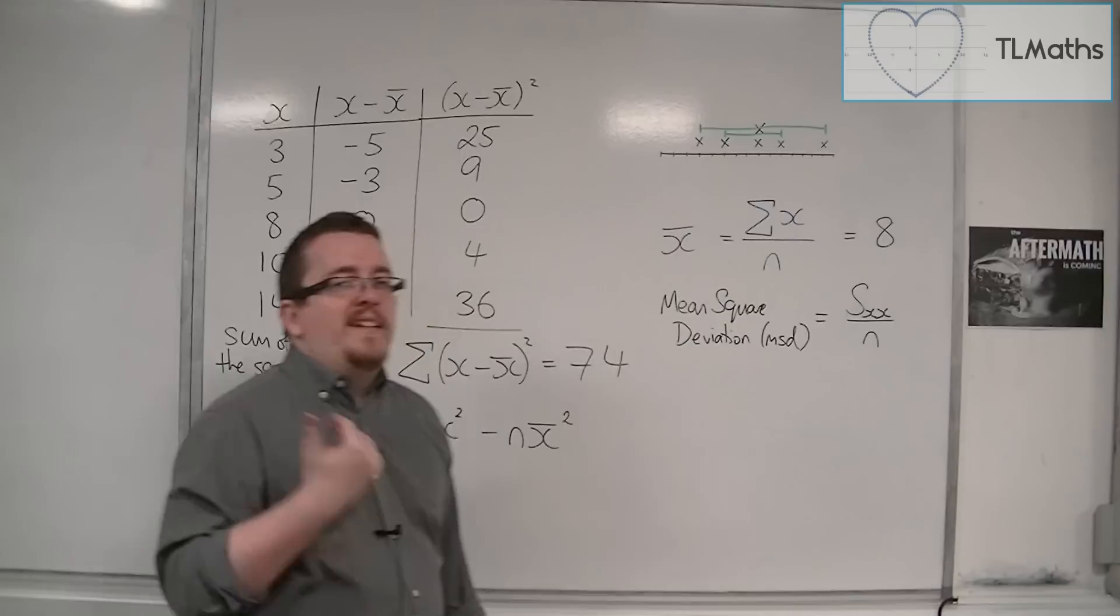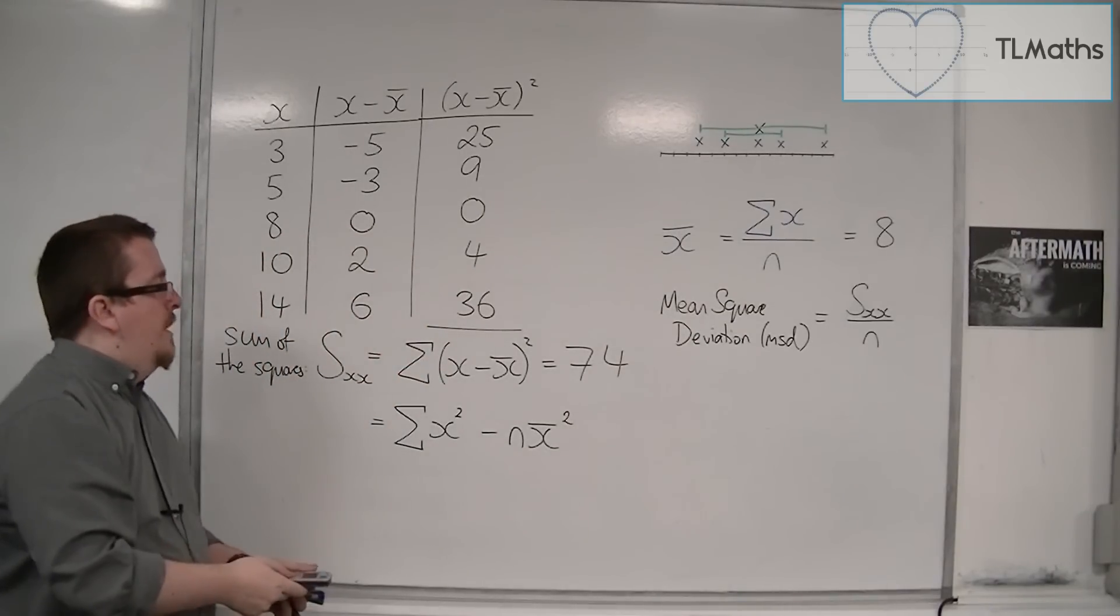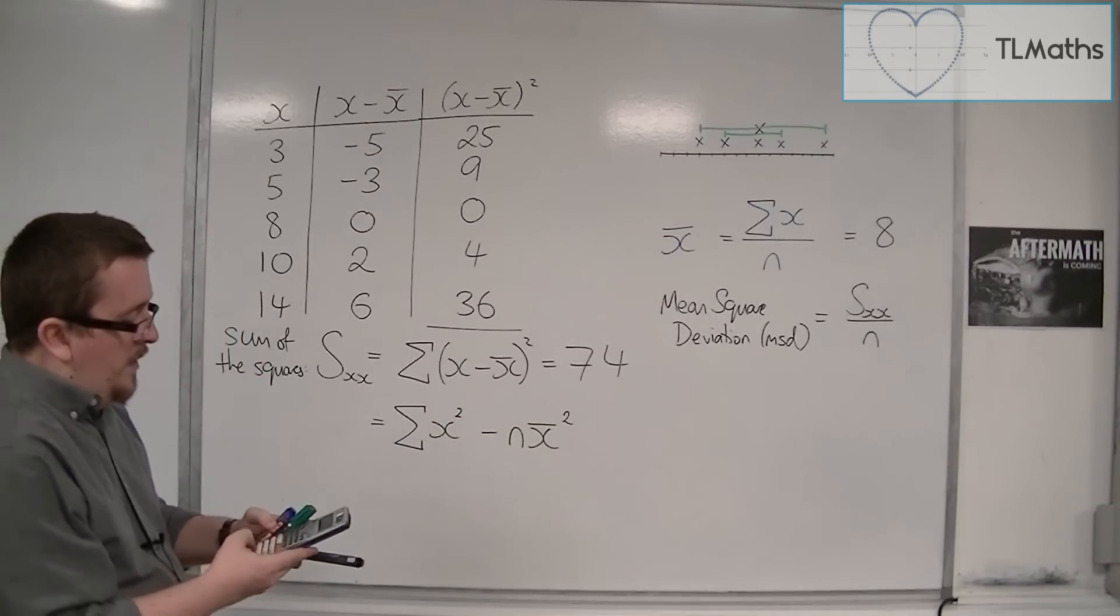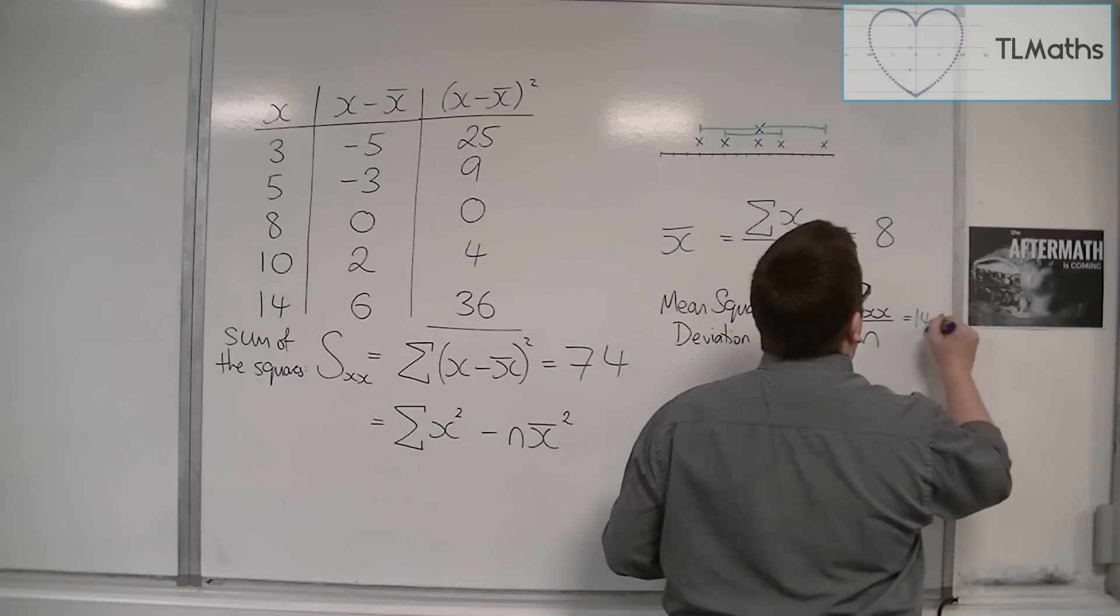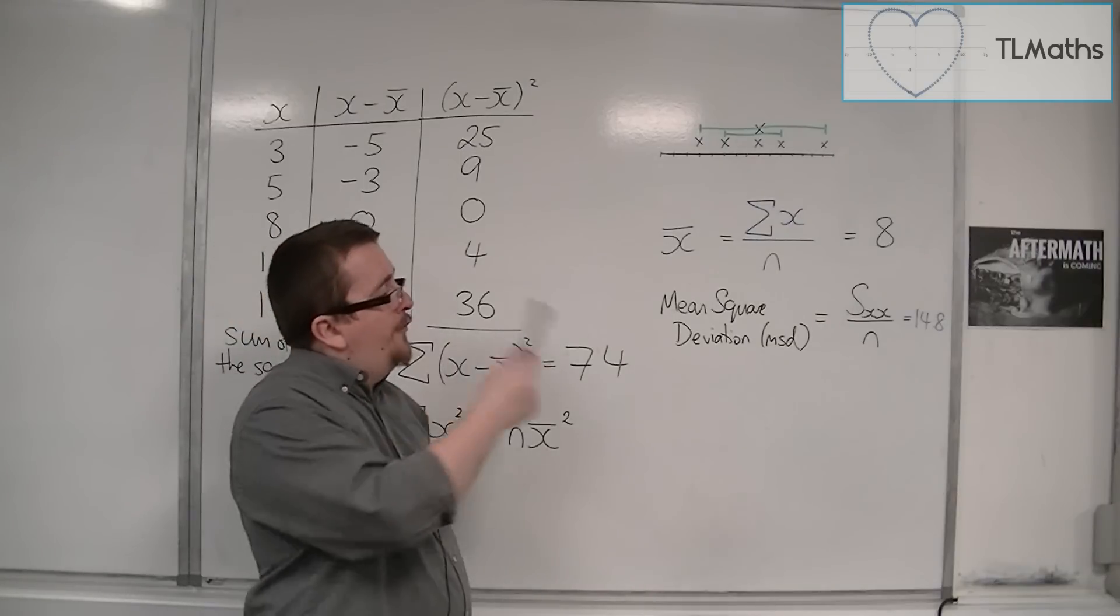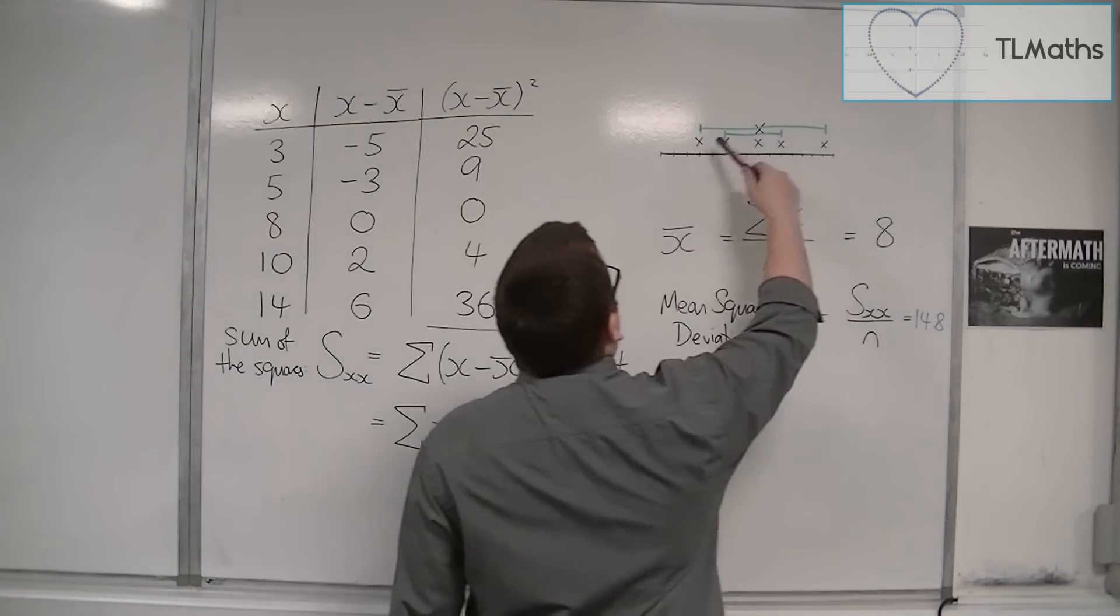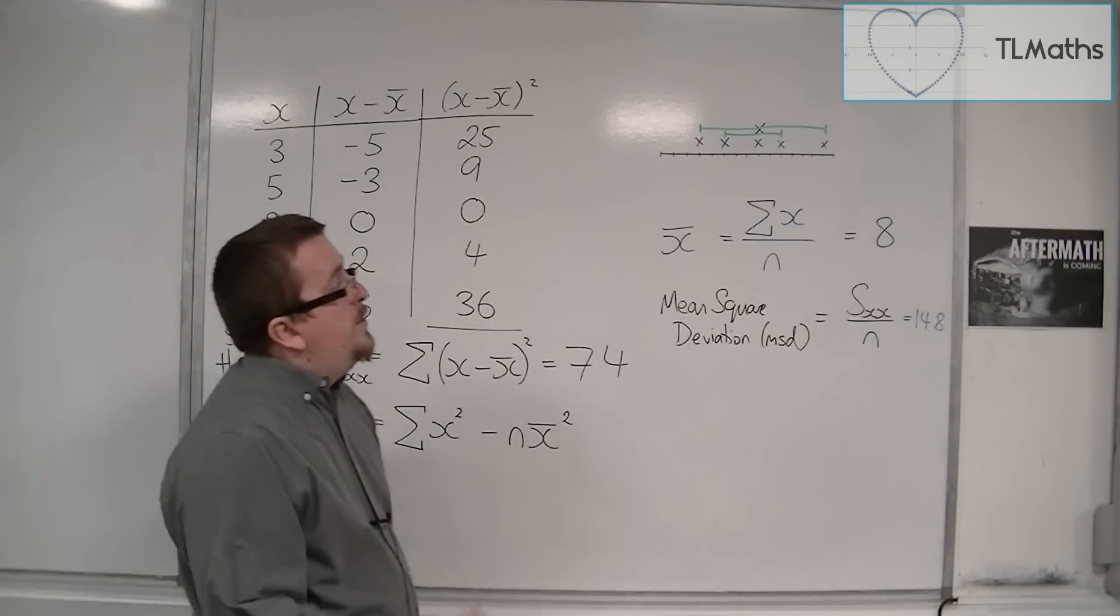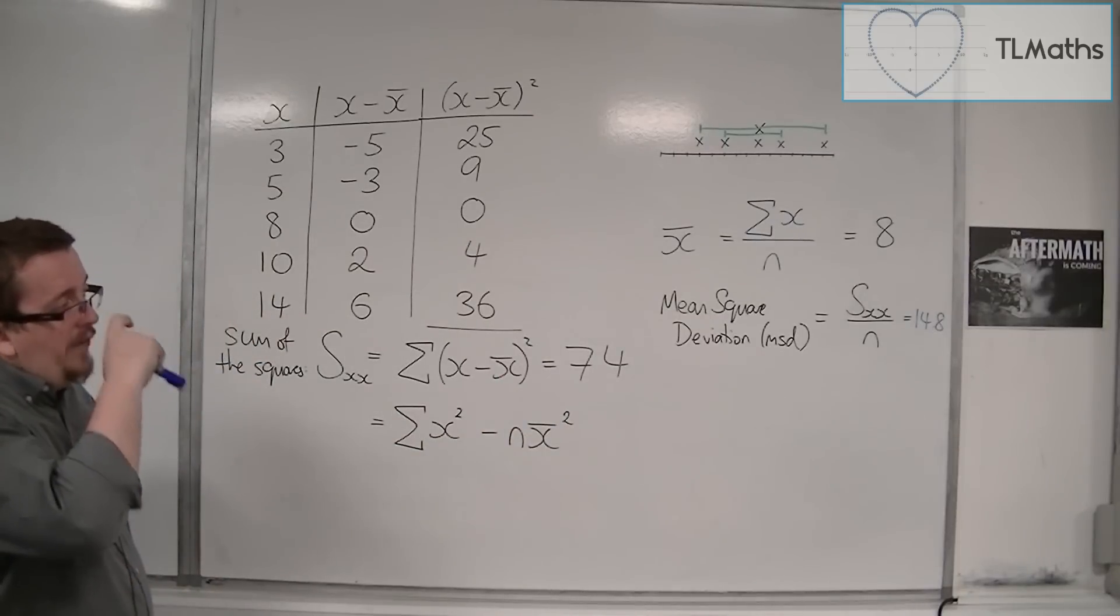However, it's not particularly useful because this gives us quite a large number. So if I do 74 divided by 5, we get 14.8. Now, it doesn't make much sense to say that on average, the data is 14.8 away from the mean. Because clearly, none of the points are 14.8 away from the mean. None of them are anywhere close to that. So really, this doesn't tell us an awful lot.